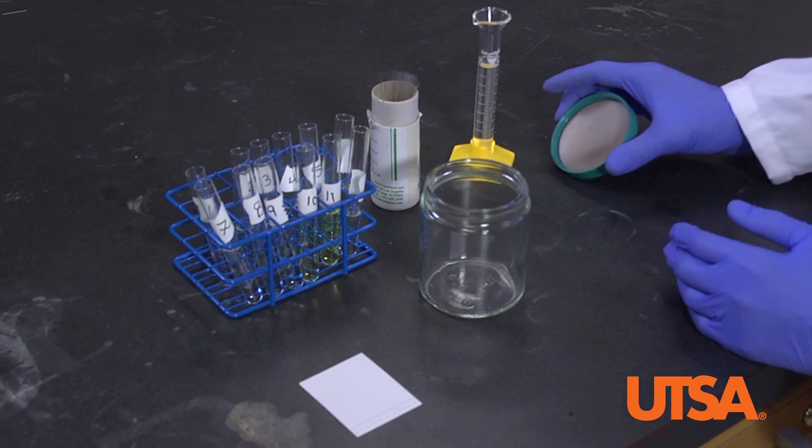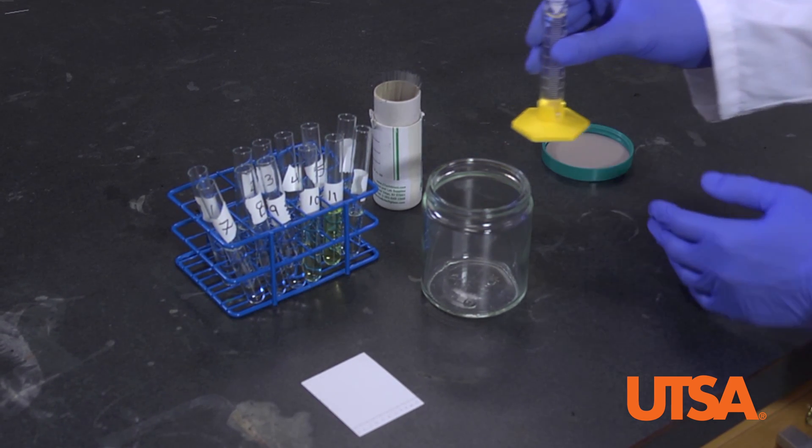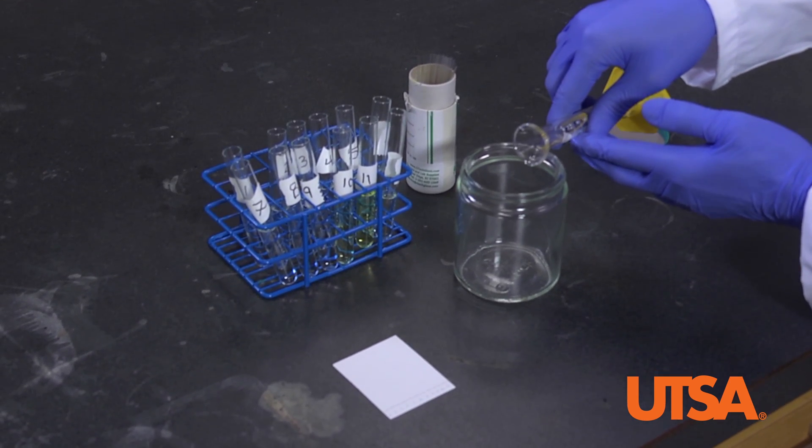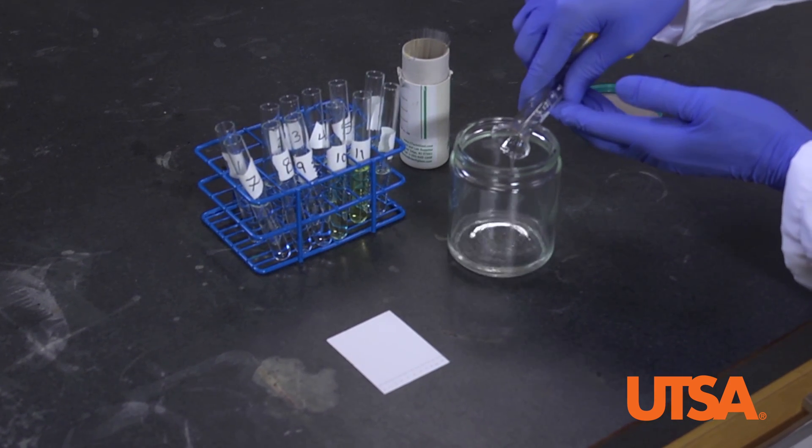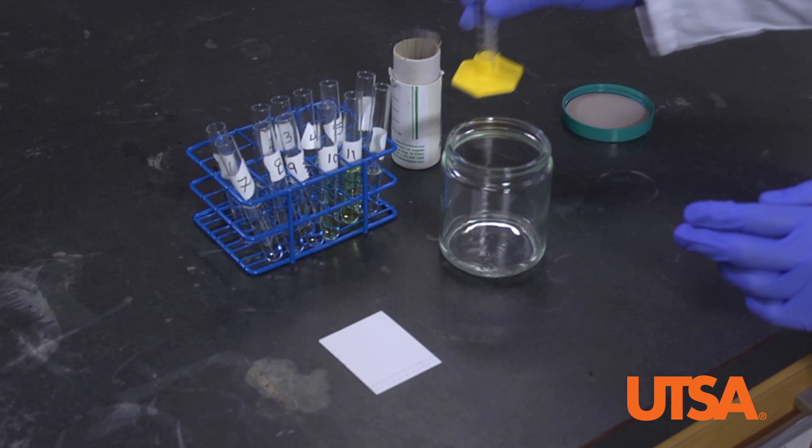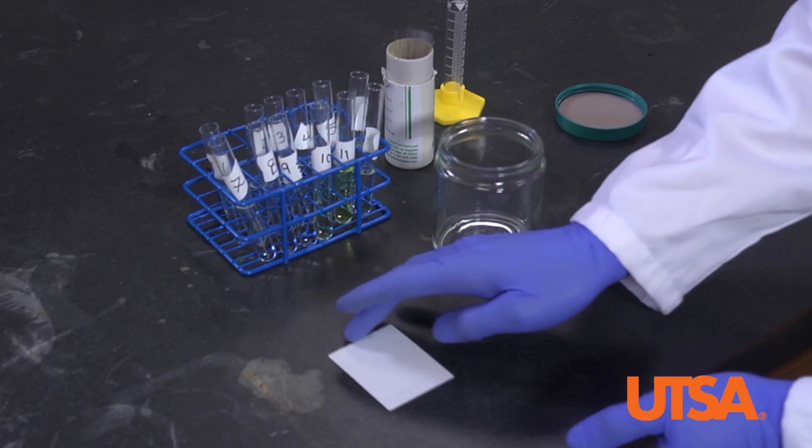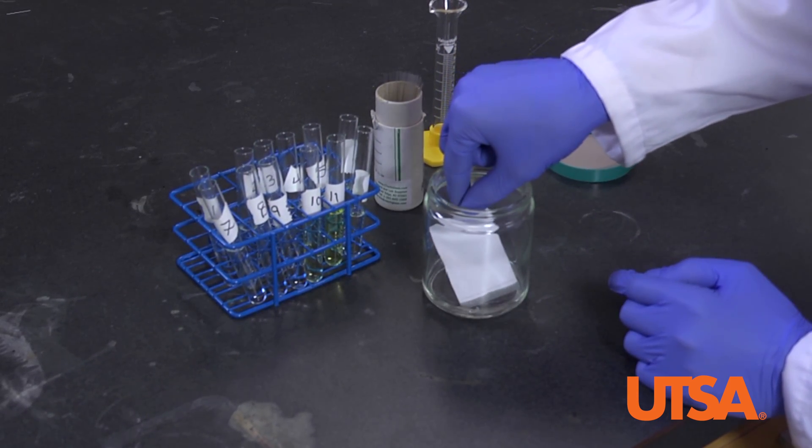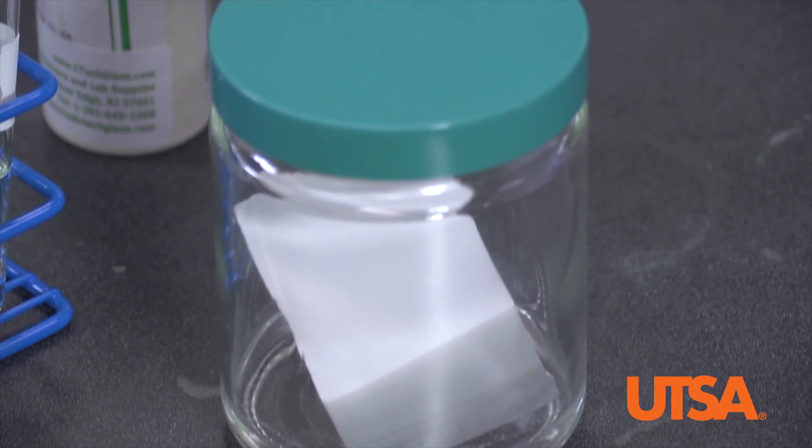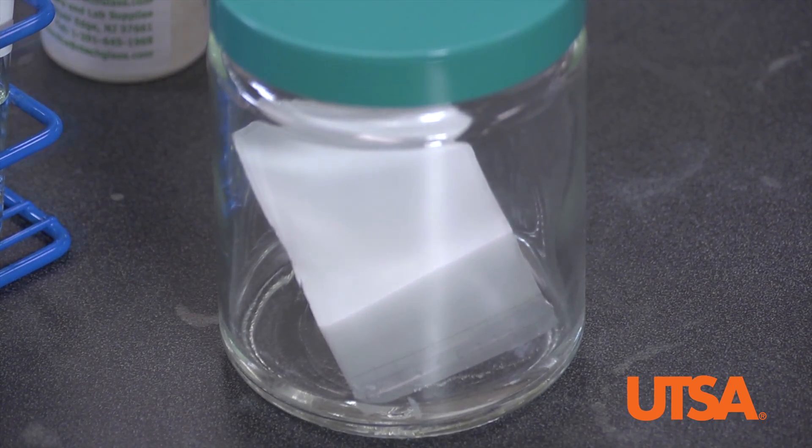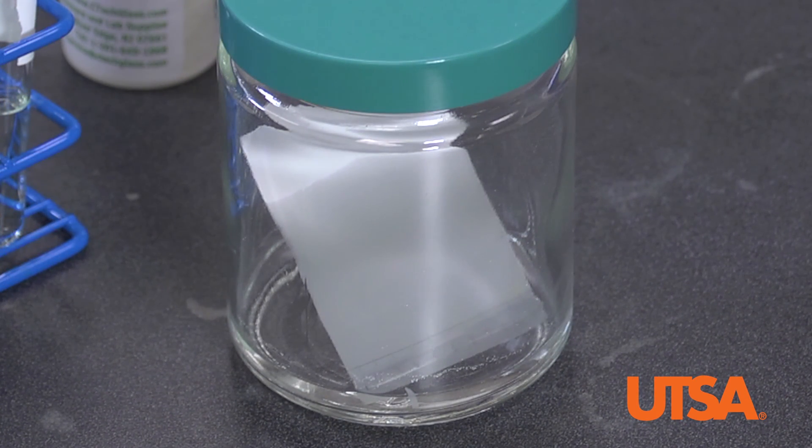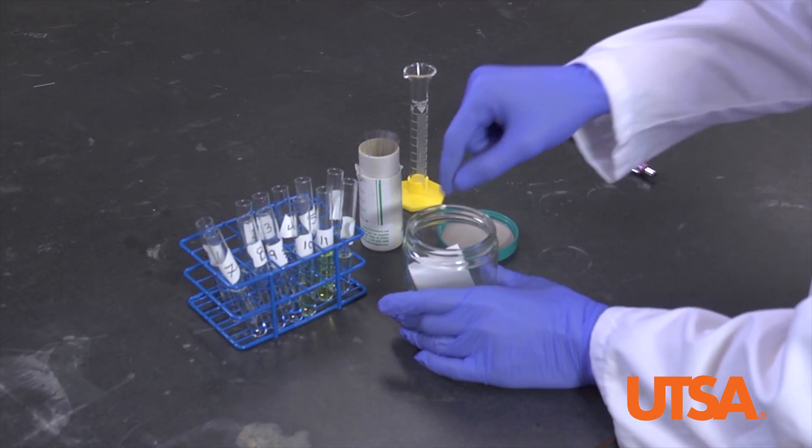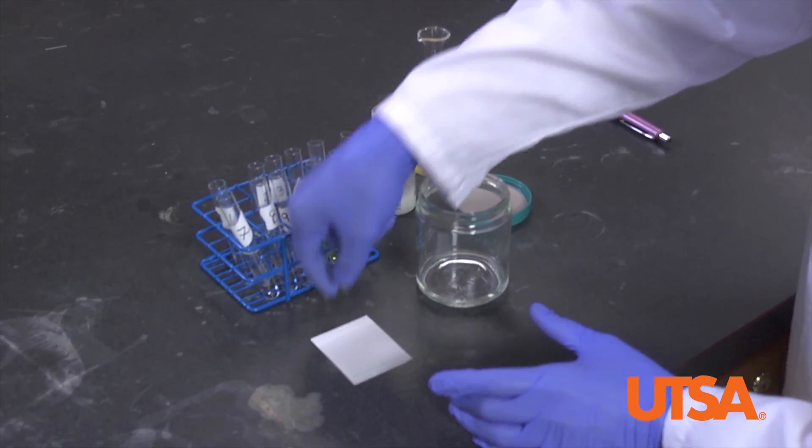Add the TLC plate to the developing chamber. Pour 10 milliliters of 15% DCM in petroleum ether into the chamber. Add the plate and lean it against the back wall of the chamber. Add the lid. Watch as the DCM rises up the plate. And before the solvent reaches a centimeter from the opposite edge of the plate, remove it from the chamber and mark with a pencil how far it traveled.